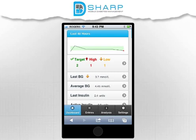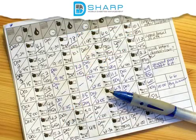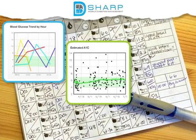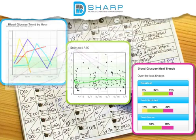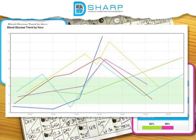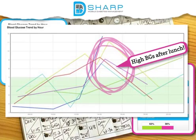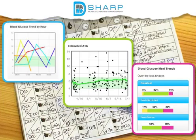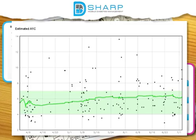Now for the analysis. It can be difficult to gather meaning from a list of numbers, which is why these pretty and informative graphs, charts, and tables were created. The blood glucose AuroGraph may show you consistently go high or low at the same time of day. The A1C estimator can help you get your A1C below 7% in between blood tests.